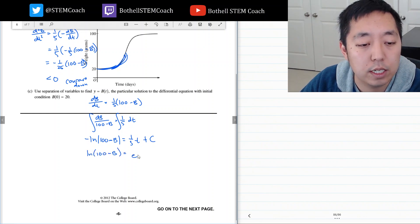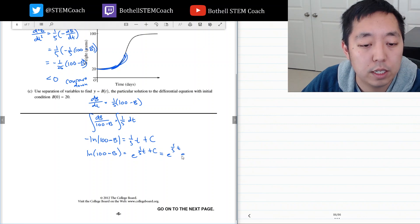...is equal to e to the one-fifth t plus c, which we write as e to the one-fifth t times e to the c. And instead of e to the c, I just leave it at c, so c times e to the one-fifth t.